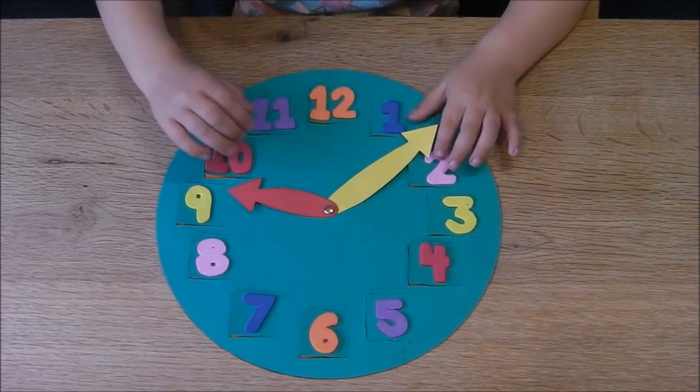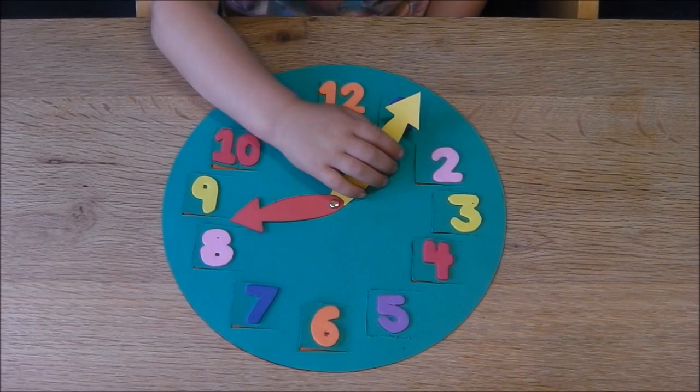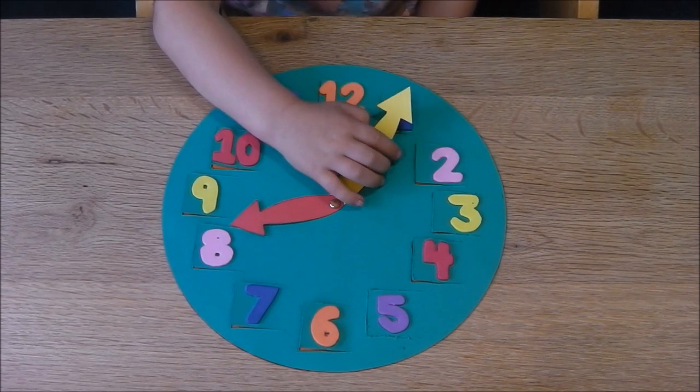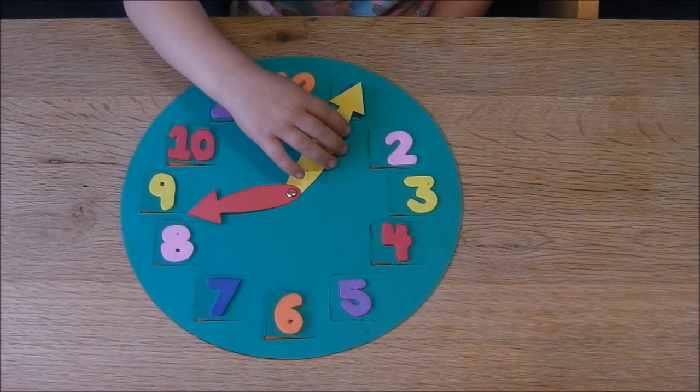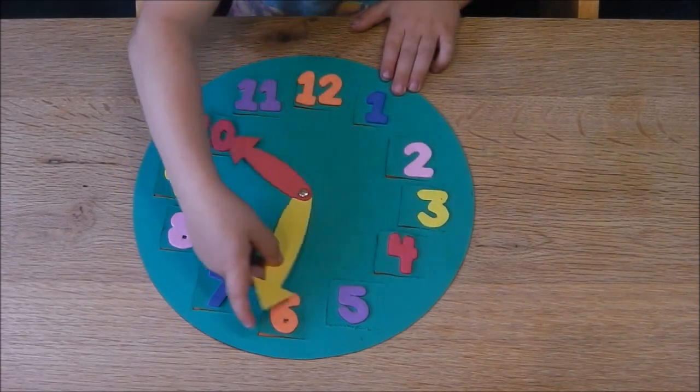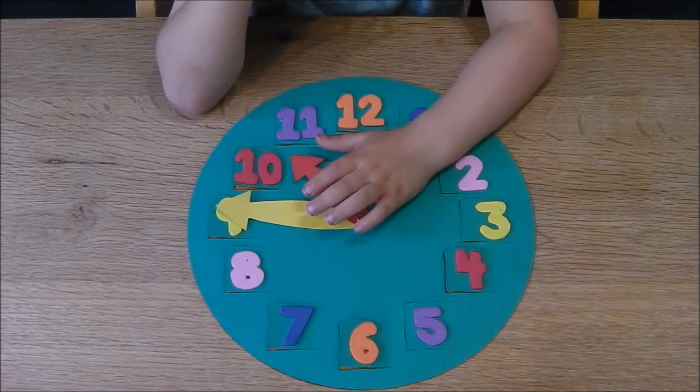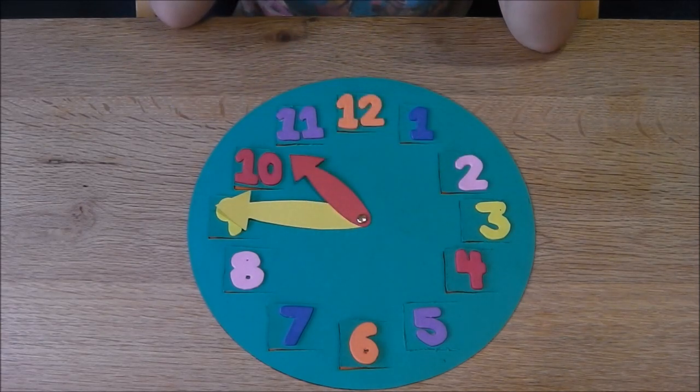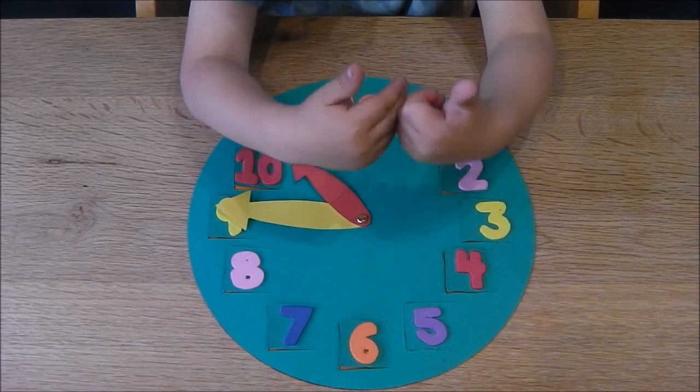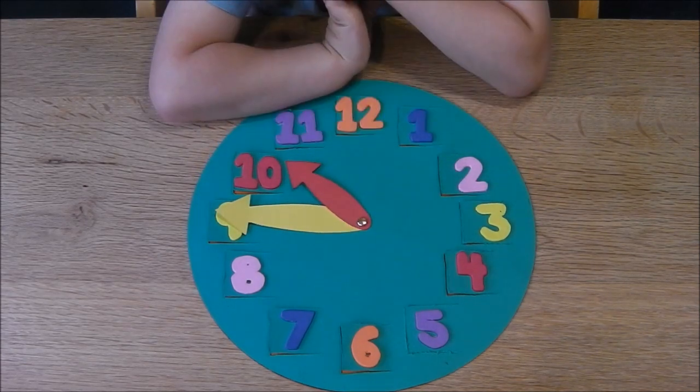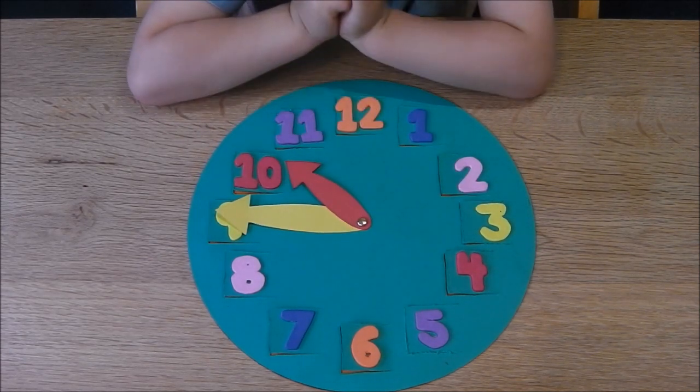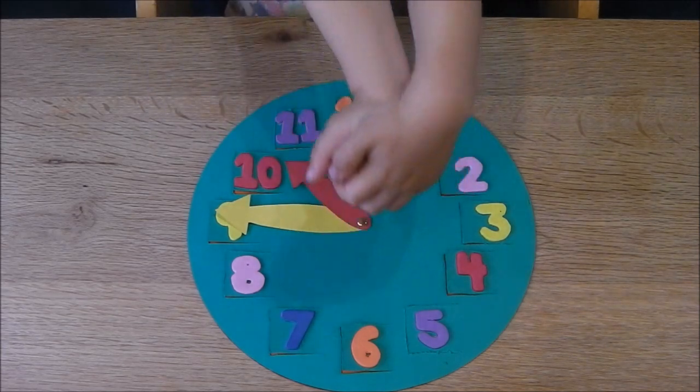What do we need this big hand for? This hand is the minute hand. It counts the numbers of minutes. This hand goes all the way around the clock every hour. The minute hand moves faster than the hour hand. That's because there are 60 minutes every hour. Which one's longer, Dougie? An hour or a minute? An hour.